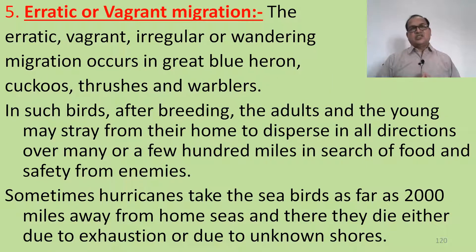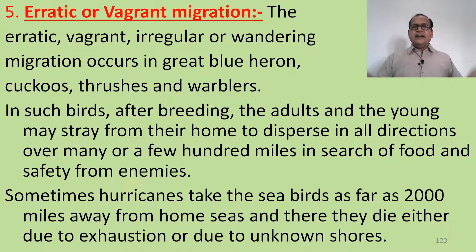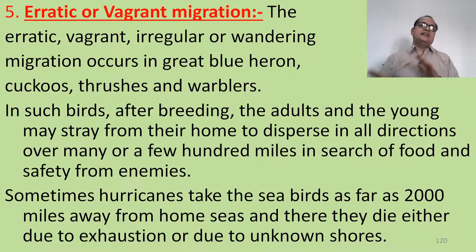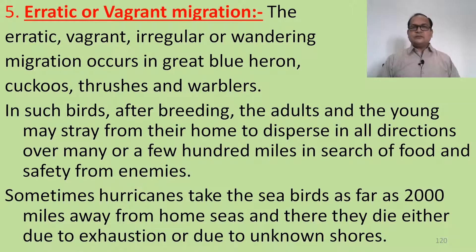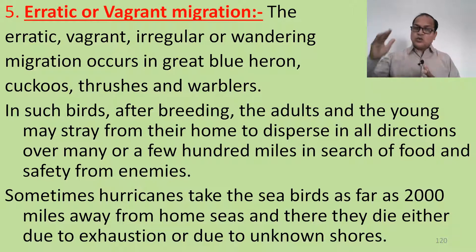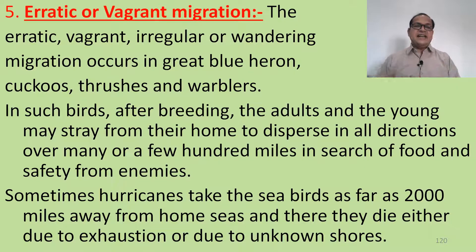The erratic, vagrant, or irregular wandering migration occurs in the great blue heron, cuckoo, starling, and warbler. In such birds, after breeding, adults and young disperse from their home in all directions over many or a few hundred miles in search of food and safety from enemies. Sometimes hurricanes take seabirds as far as 2,000 miles away from their home seas, and they die either due to exhaustion or due to landing on unknown shores.